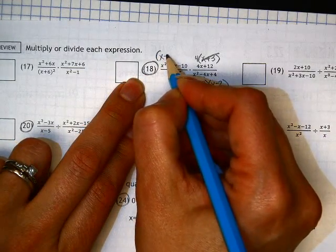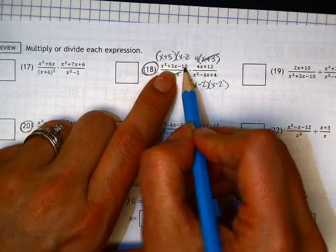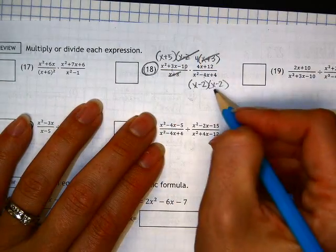I'm going to get x plus 5 and x minus 2 because those multiply to get a negative 10 and subtract to get a 3. So, that guy and that guy.